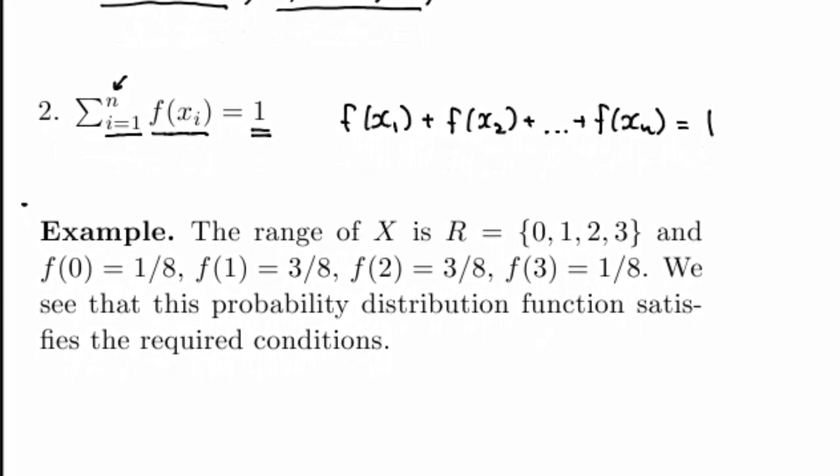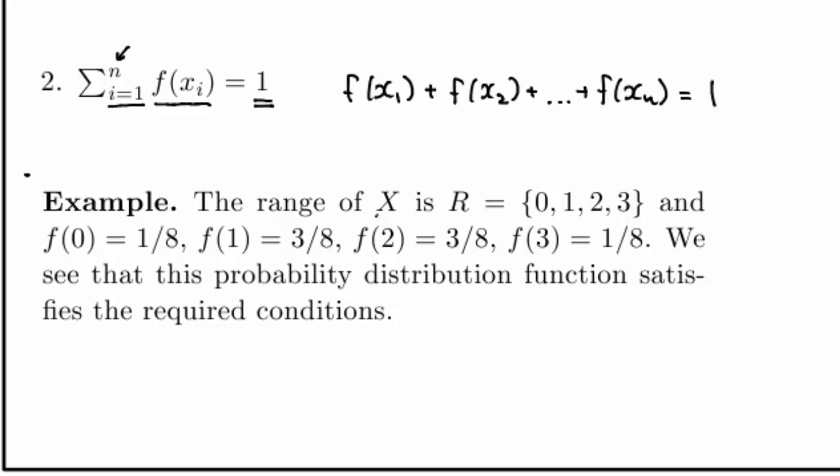Here's an example. Let's say I have a random variable x, its range is 0, 1, 2, and 3. I have a probability distribution function given by f of 0 being 1 over 8, f of 1, 3 over 8, f of 2, 3 over 8, and f of 3, 1 over 8.